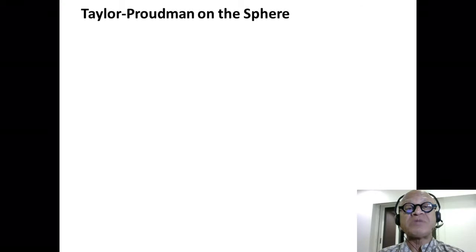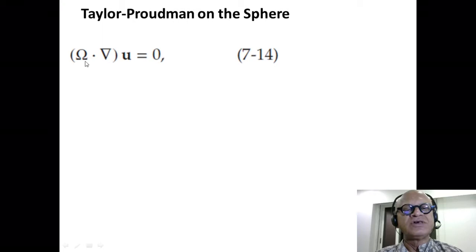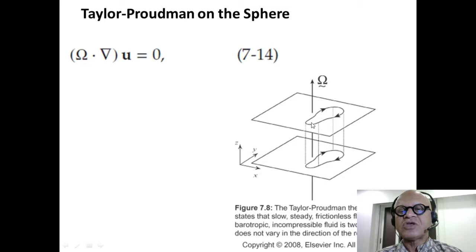In the meantime, let's think about Taylor columns. Remember, the Taylor columns were for steady, inviscid, barotropic fluid. The fluid was two-dimensional in a direction parallel to the rotation vector, which was represented as Ω·∇u = 0.